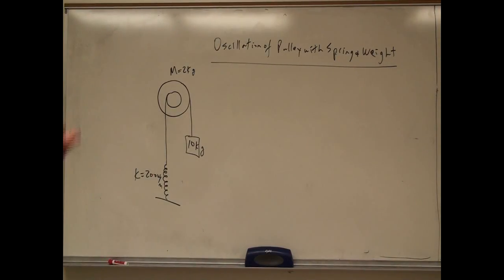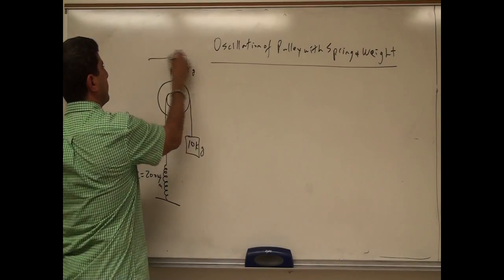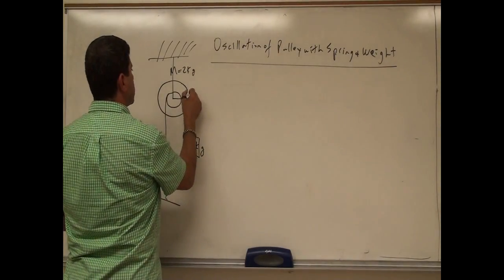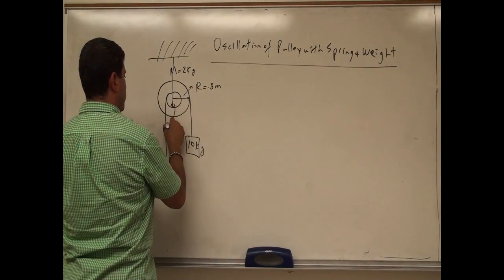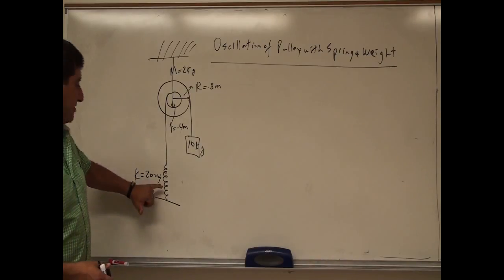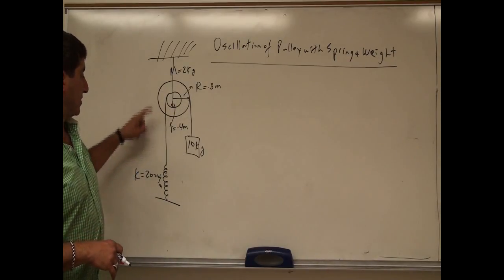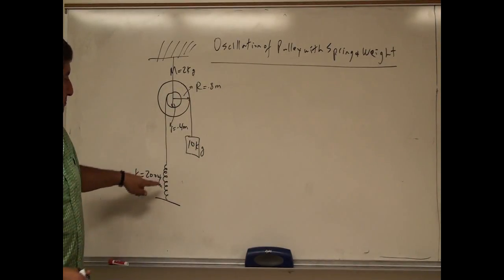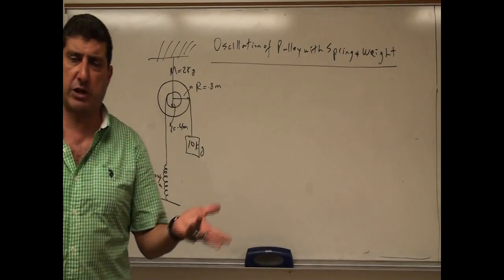What's the frequency of oscillation? The pulley is hanging from the wall so it's supported. I'll give the pulley a big radius R equal to 0.8 meters, and a small radius r equal to 0.4 meters — half the big radius. So how do we approach problems like this where you have a spring, a weight, a pulley with mass, and two different axles? The spring is connected to one axle and the weight is wrapped around the other.